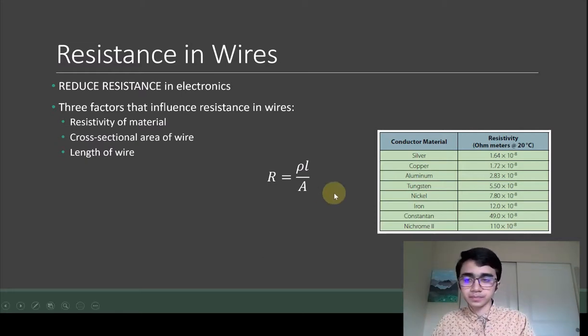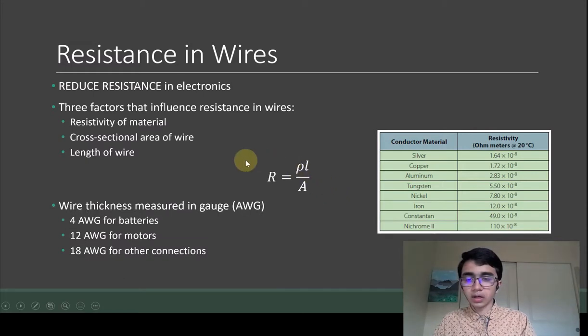Wire thickness is measured in gauge. The acronym for gauge is American Wire Gauge, or AWG. AWG is kind of just used in America because they're special.